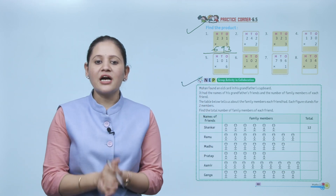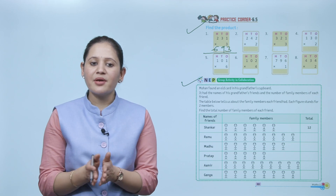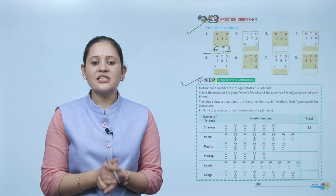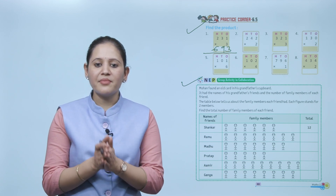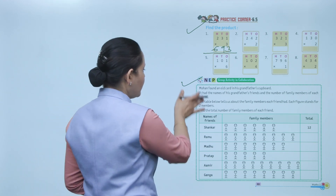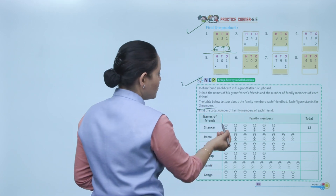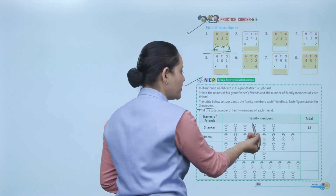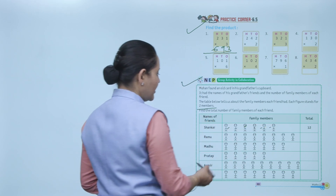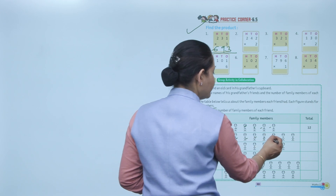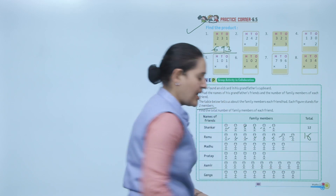Next: group activity. Moreon found an old card in his grandfather's cupboard with names of friends and their family members. Each figure stands for 2 members. Find the total number of family members of each friend. For example, 2+2+2+2+2+2 means 6 figures, so 2 into 6 equals 12. Another friend has 8 figures, so 2 into 8 equals 16. Find all totals this way.